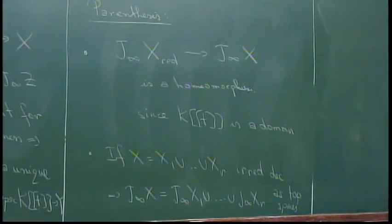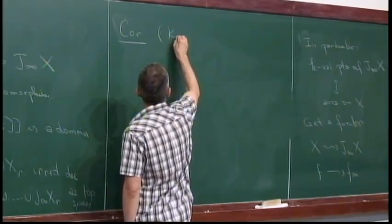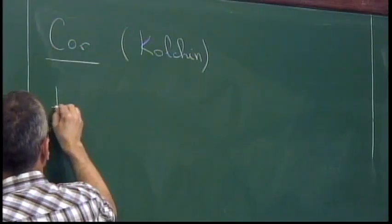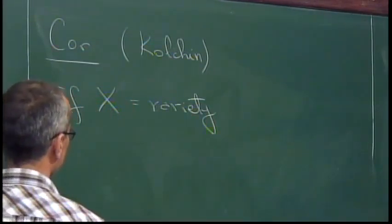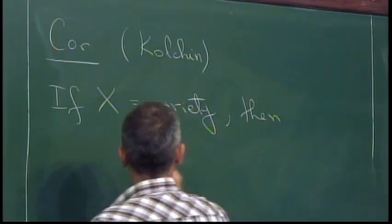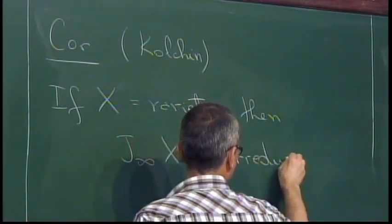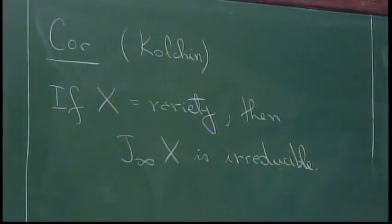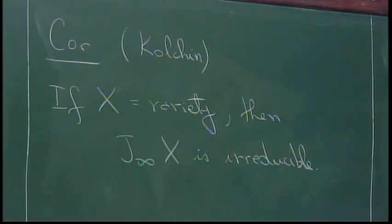A corollary of Proposition 1, which is in fact a theorem due to Kolchin, is that if X is a variety (irreducible reduced), then J_∞(X) is irreducible. This is one of the starting points in differential algebra. I'll prove this because the idea in the proof is closely related to what I'll discuss in connection with the Nash problem.